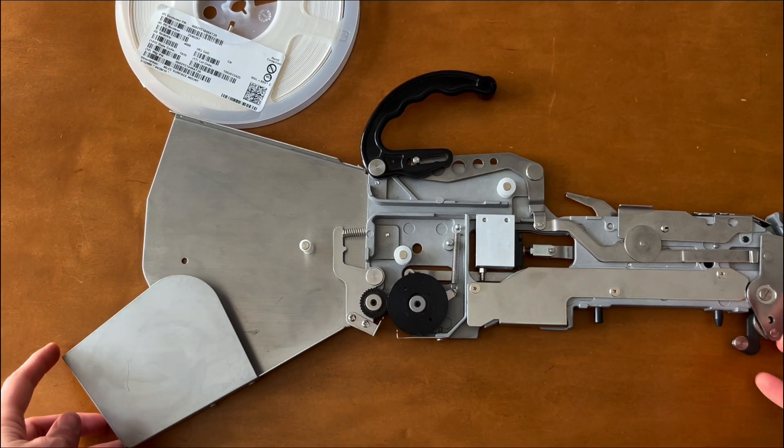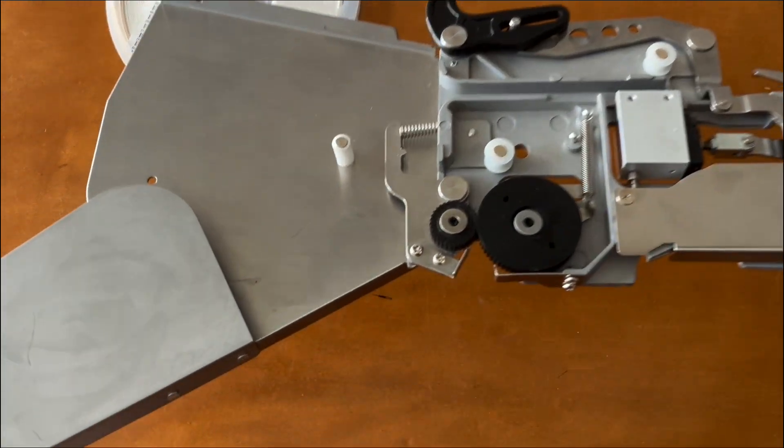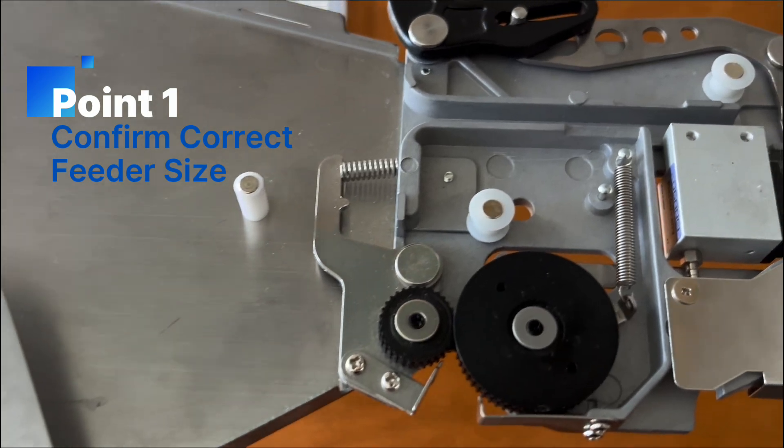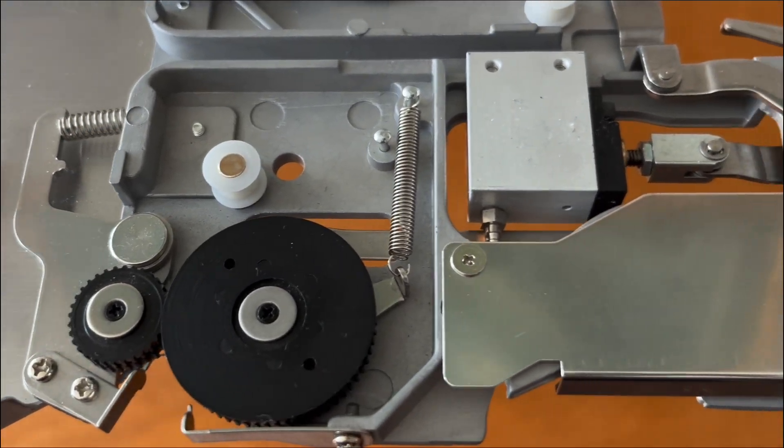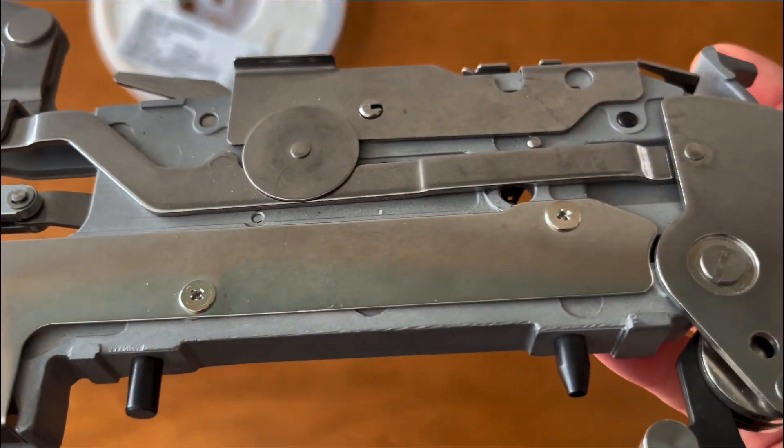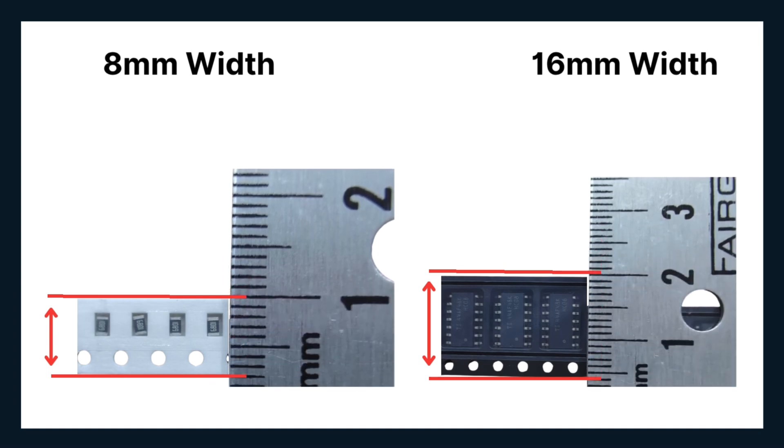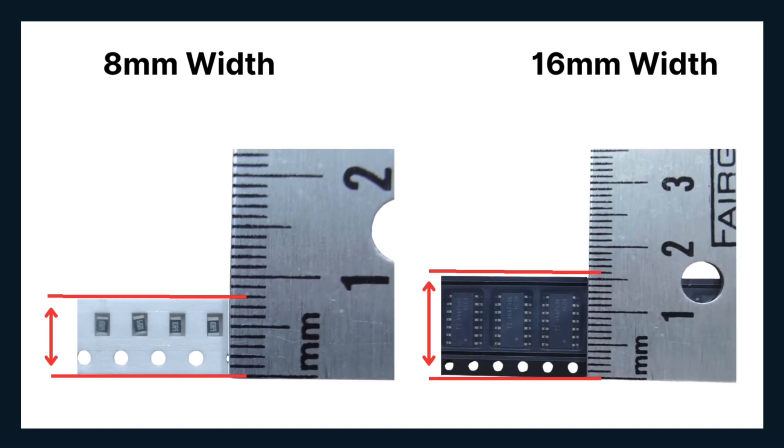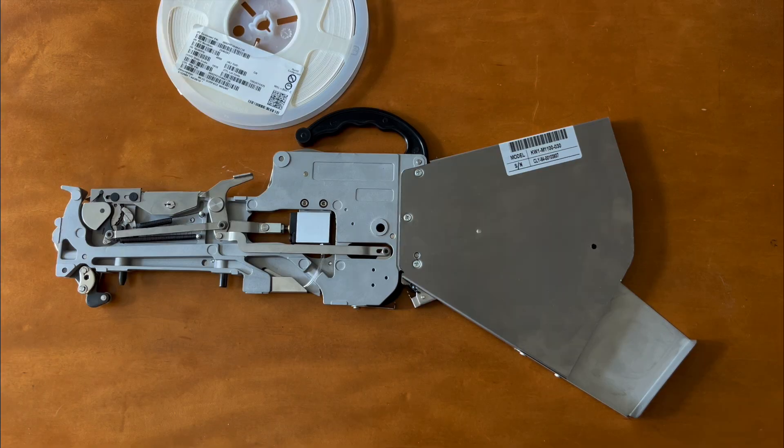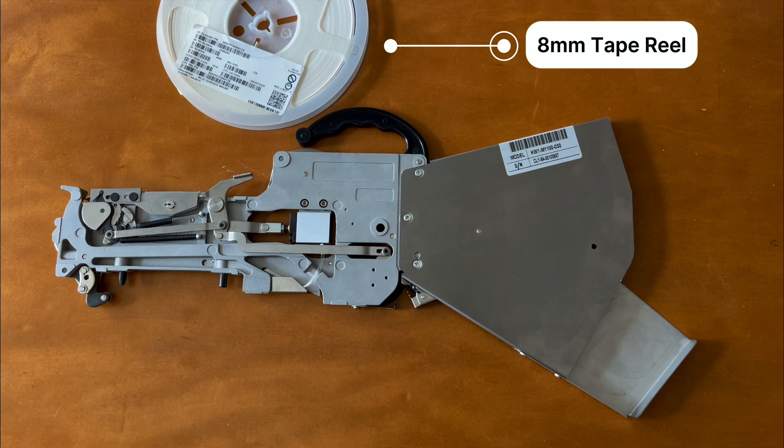Before we get started, let's go over a few important points to ensure a smooth setup. First, make sure you're using the correct feeder size for your tape reel. Feeder sizes commonly range from 8mm to 56mm, and the feeder size should match the width of your tape reel. To measure the tape width, place a ruler across the tape like this. In this example, the tape width is 16mm and should be loaded into a 16mm feeder. In this tutorial, we're working with an 8mm tape reel, so we'll use an 8mm feeder.